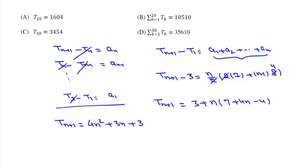Now first we will find the value of T₂₀. If we put n = 19, we will get 4×19² + 3×19 + 3. This value is 1504, not 1604, which means option A is incorrect.